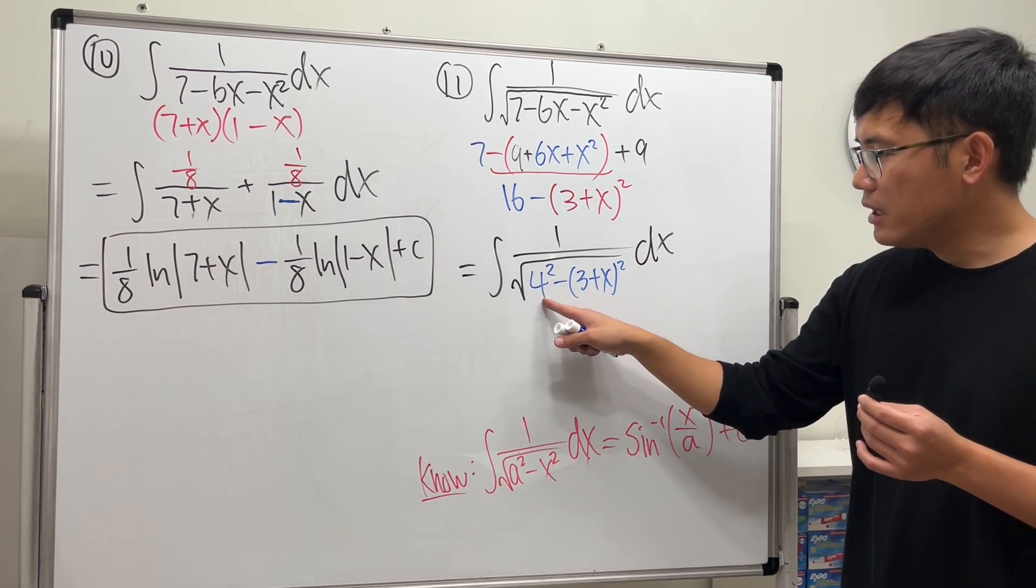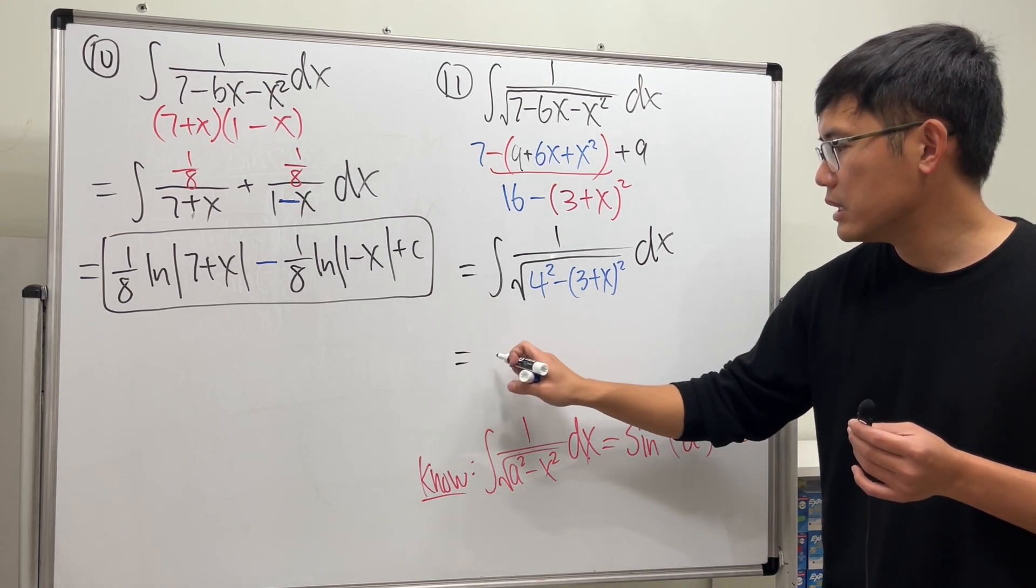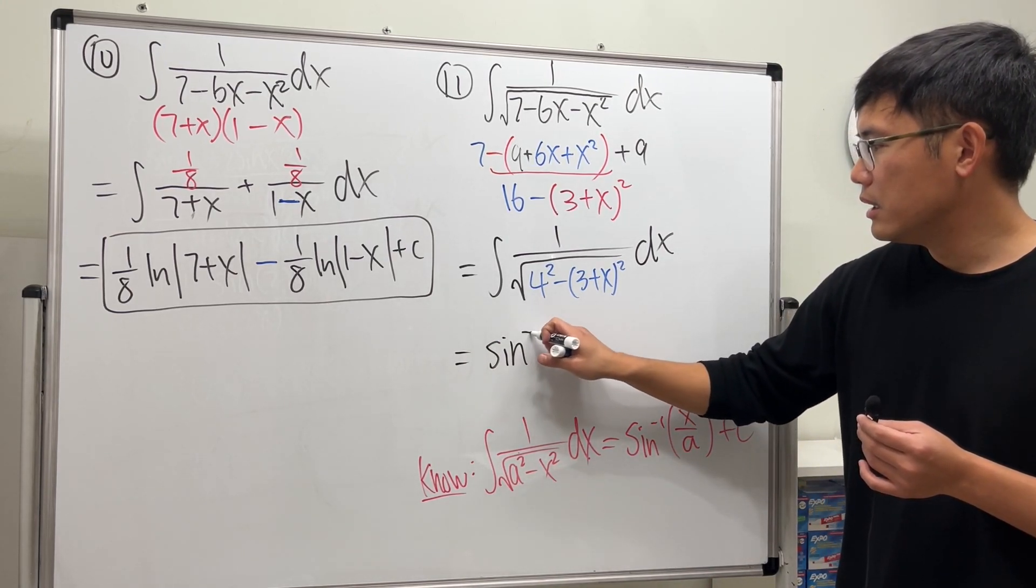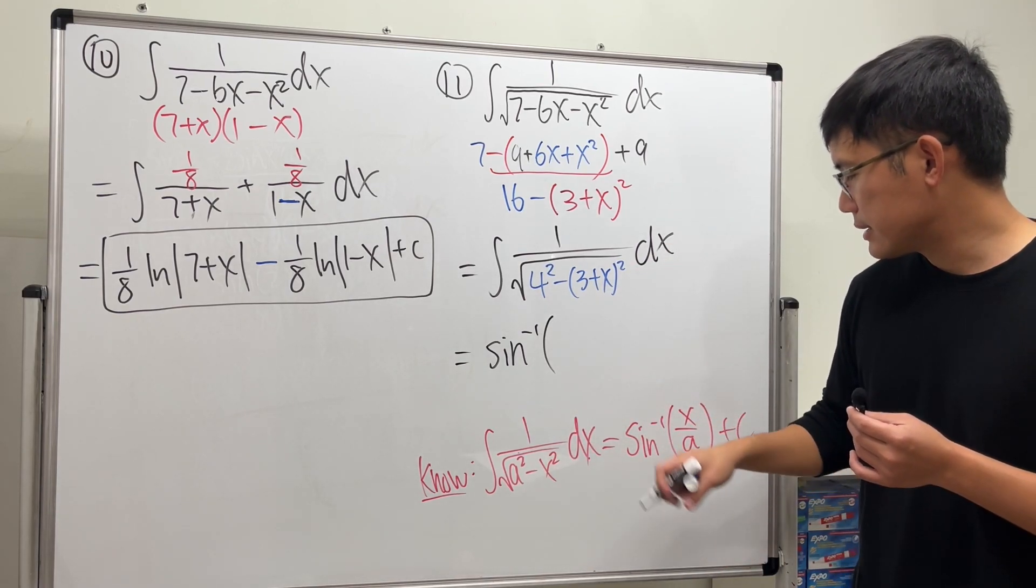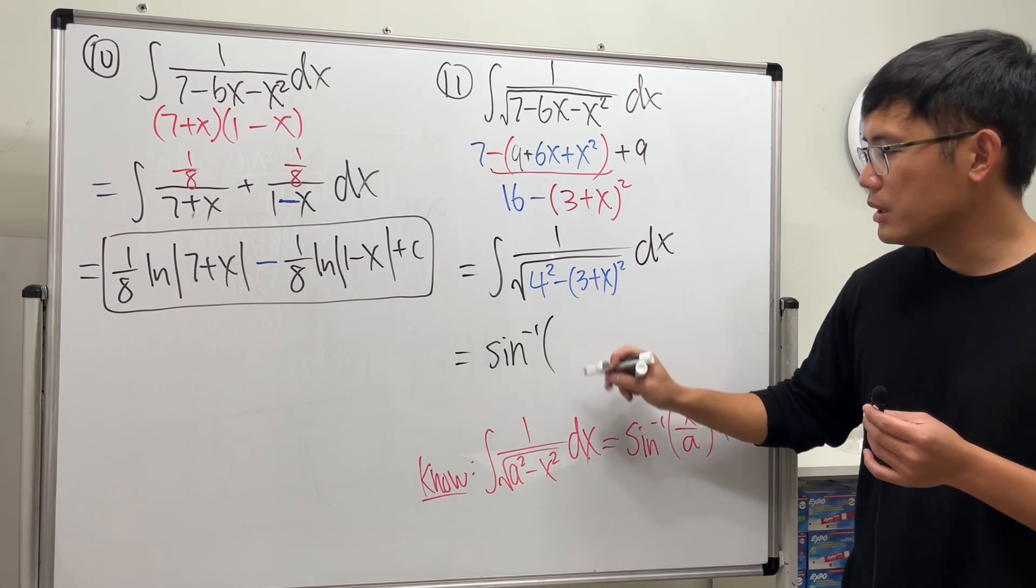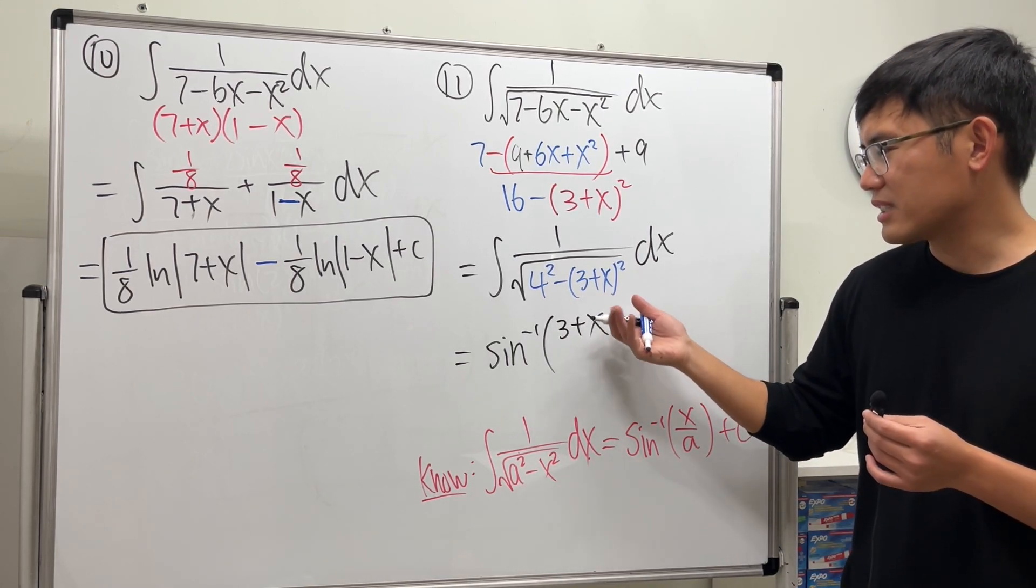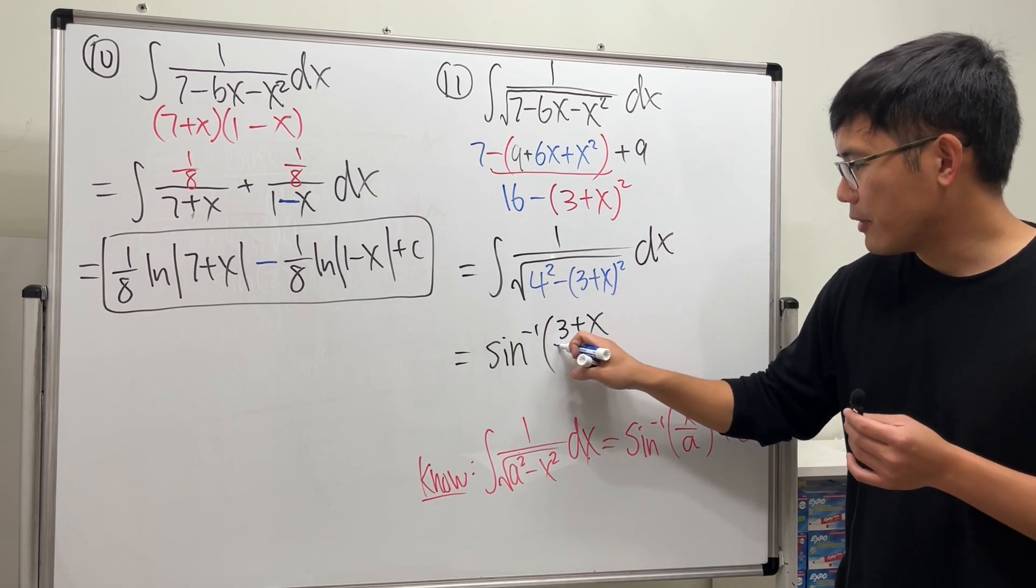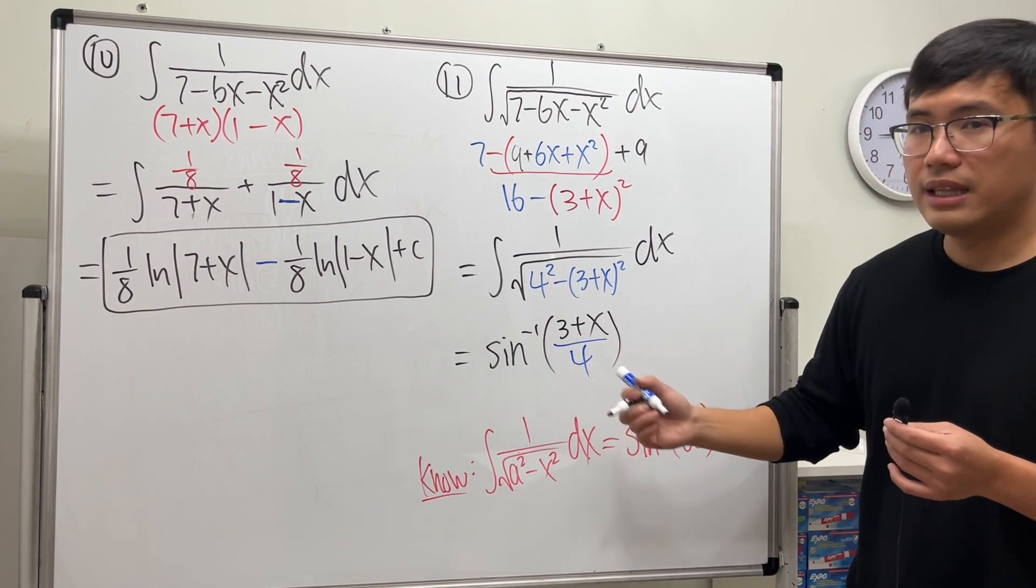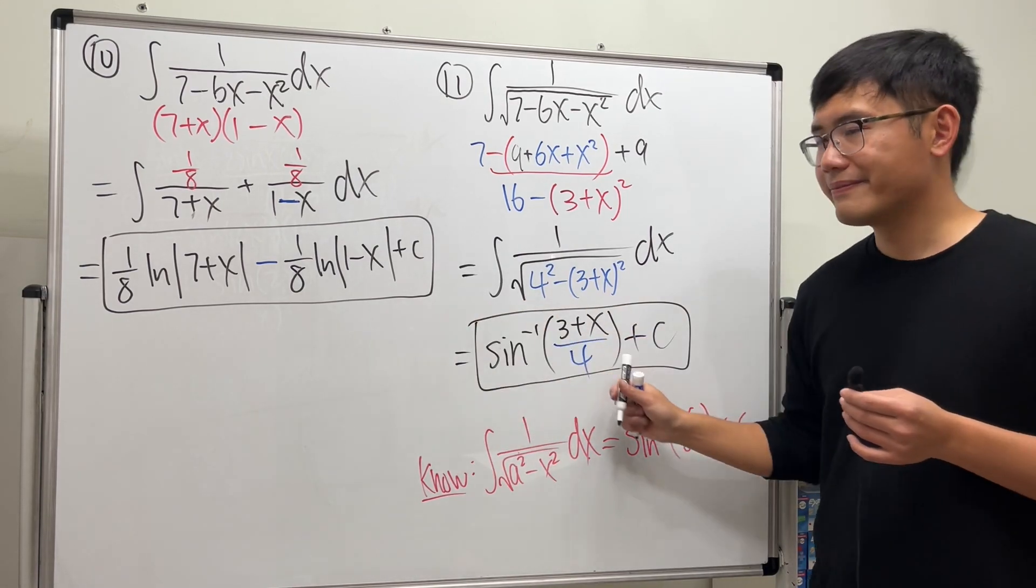The a here is 4, so use this formula. We will end up with inverse sine of 3 plus x. This right here is our function, which was this input, so we have 3 plus x. Of course, you can also write it as x plus 3 if you're going to make it nice.